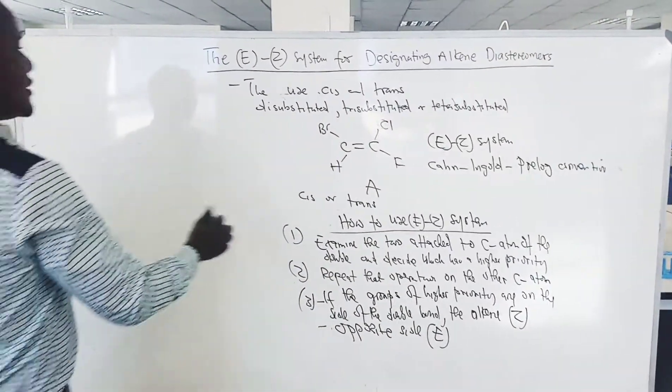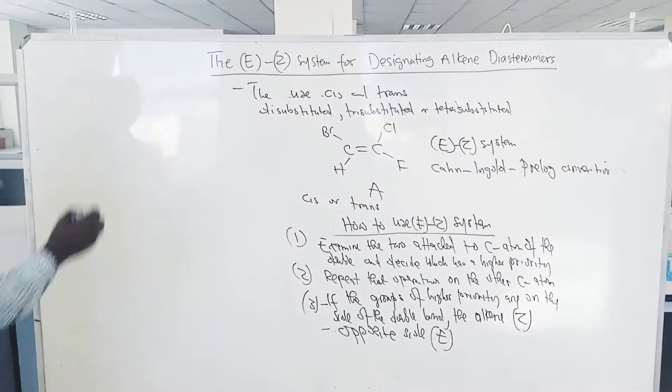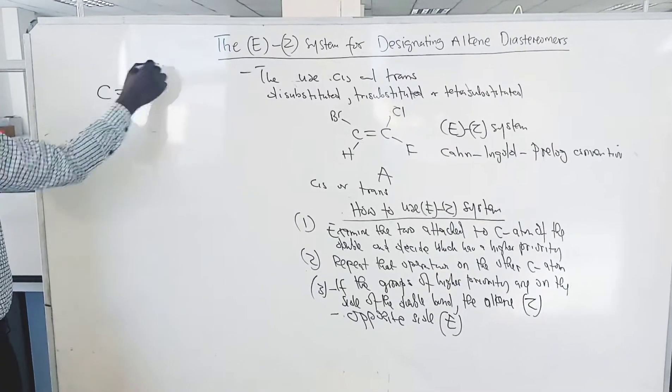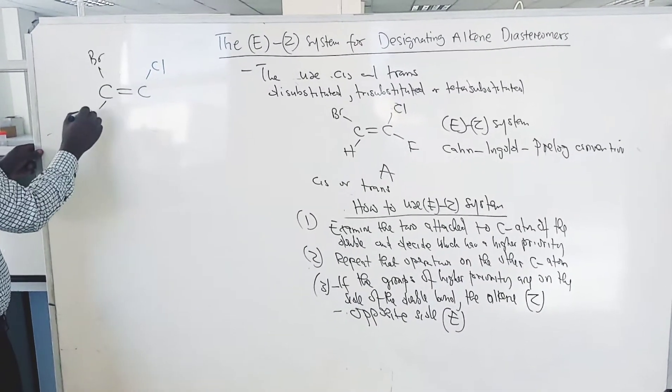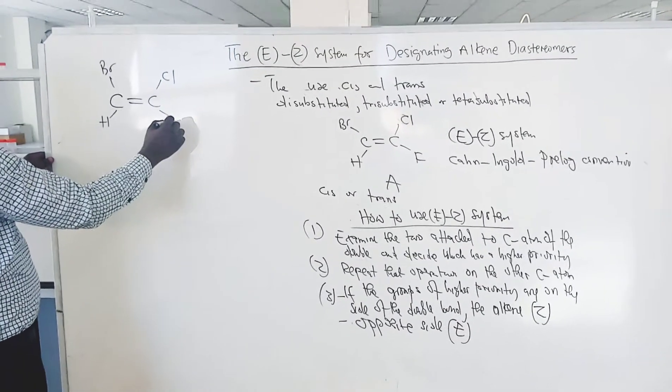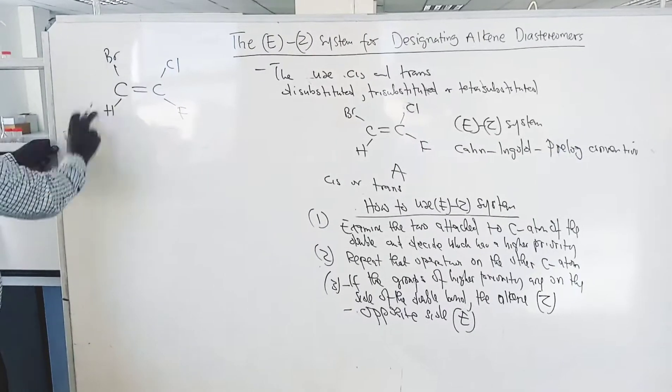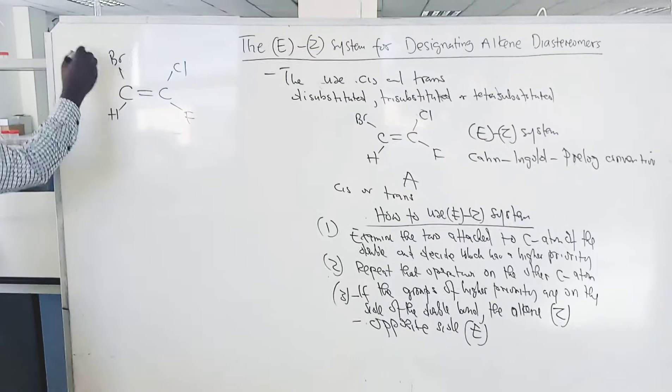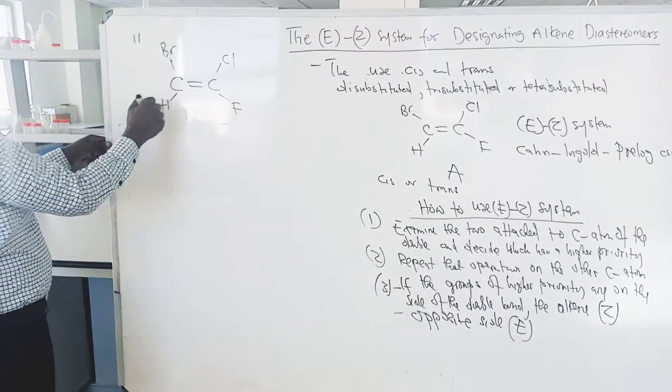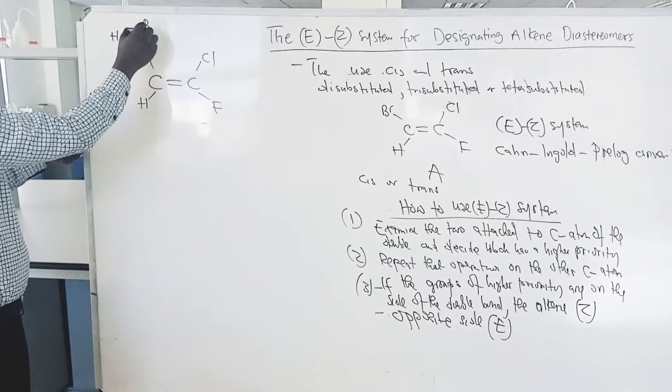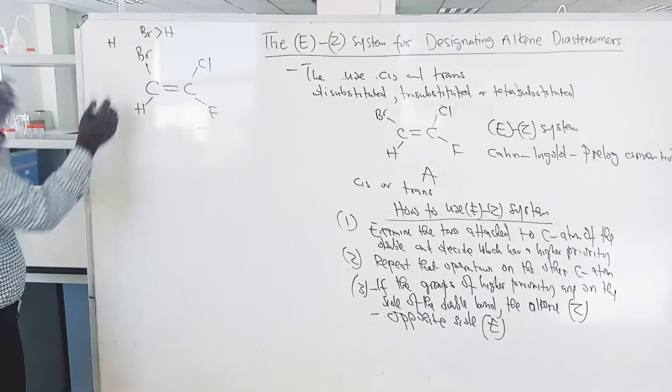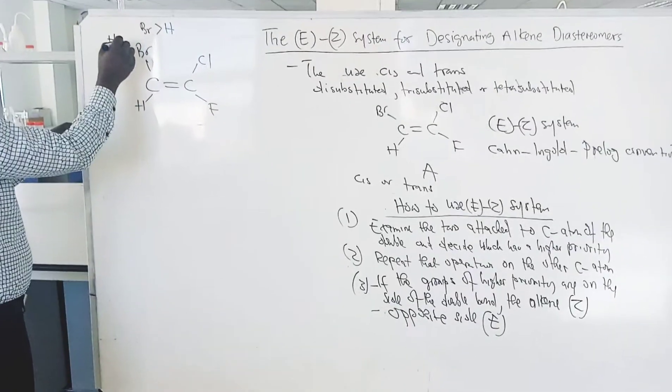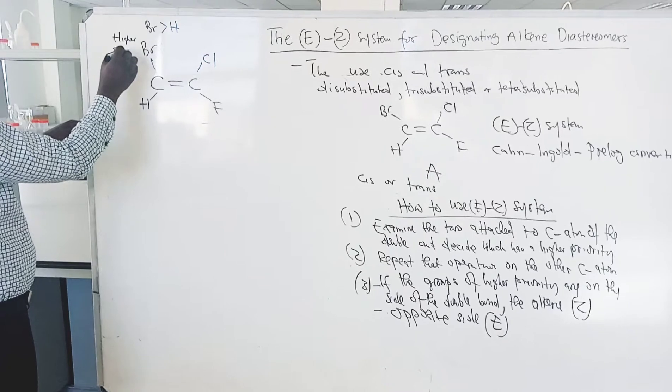So now, let's name compound A. We have carbon, carbon, chlorine, bromine, then we have hydrogen and fluorine. So, we compare, we examine the two groups. We have, we compare bromine and hydrogen. We know that bromine has a higher priority than hydrogen. So, these priorities are based on atomic numbers. So, higher priority is on the bromine atom.